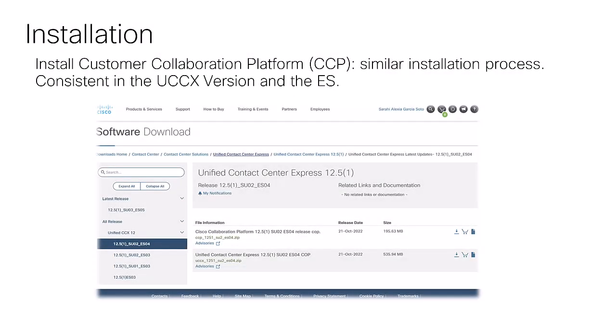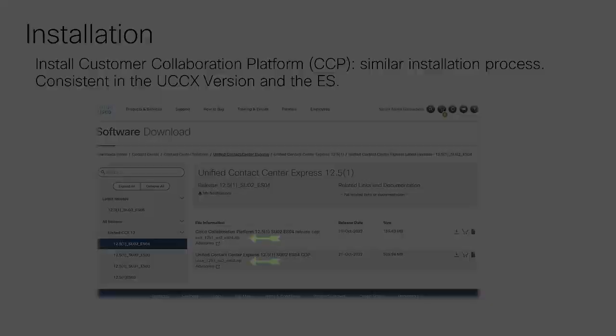Once we know the scenario we are working with, we can download and install the CCP server. This process is pretty similar to other Cisco voice products, just like UCCX or Call Manager. You will be able to download the zip files by visiting the software.cisco.com webpage. One important note: the UCCX and the CCP servers must be on the same version, and this also includes the ES patch.